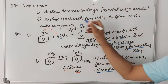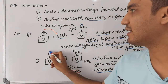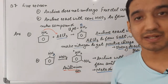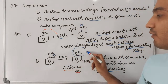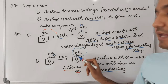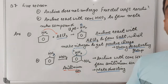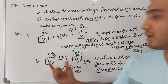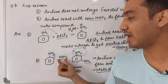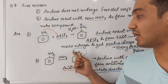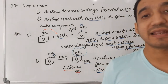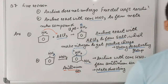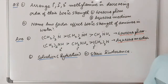When aniline reacts with concentrated nitric acid, HNO₃ releases H⁺. Aniline reacts with H⁺ to form an anilinium ion. In the anilinium ion, the nitrogen becomes an electron-withdrawing group. As a result, the NO₂ group attaches only at the meta position. So aniline with concentrated HNO₃ gives the meta-nitro compound.